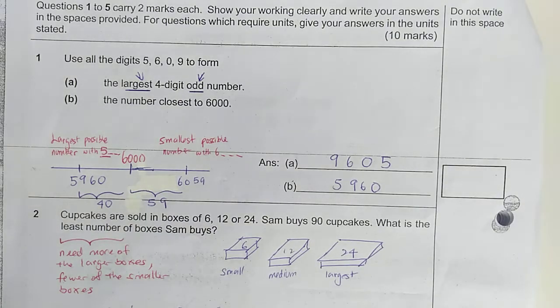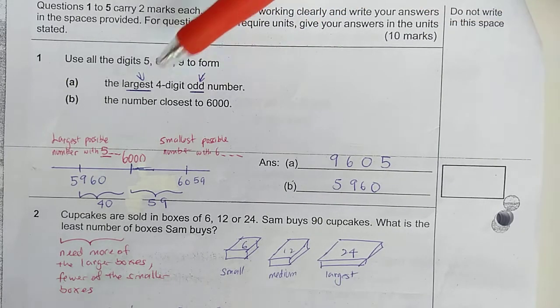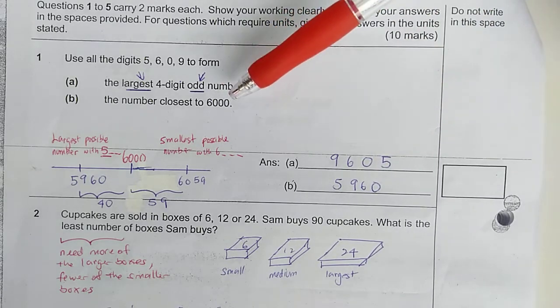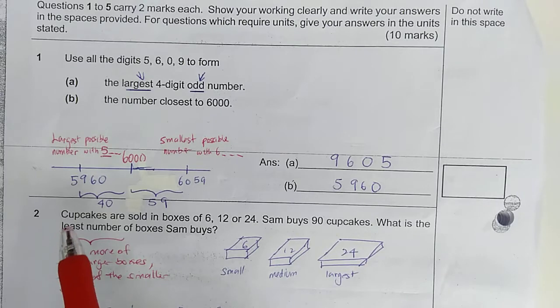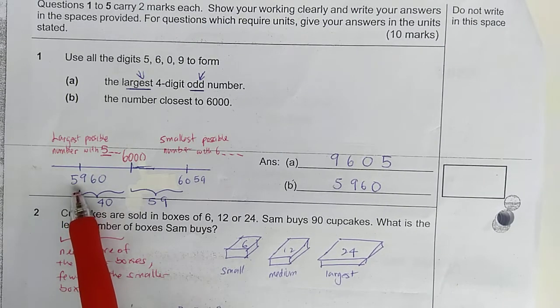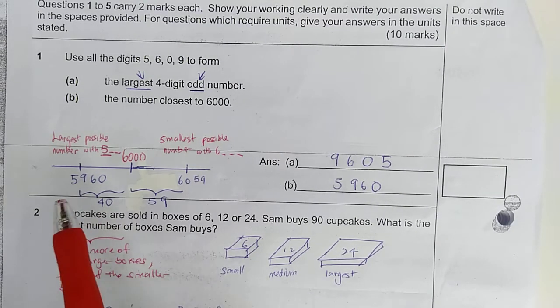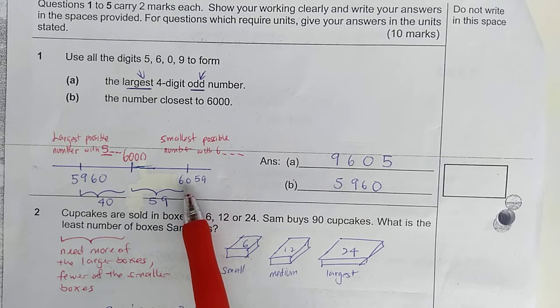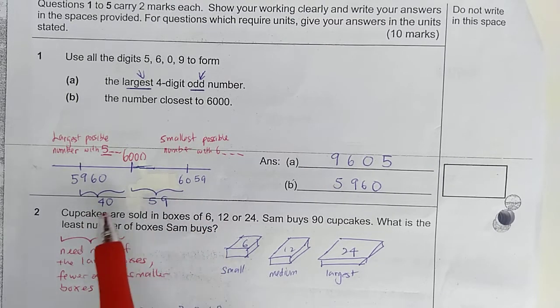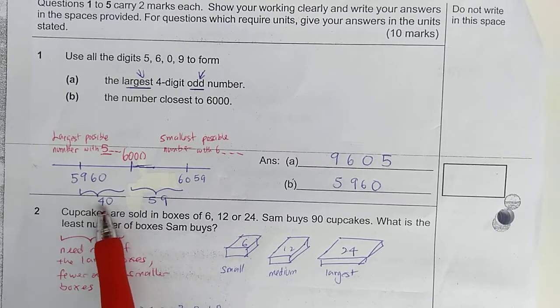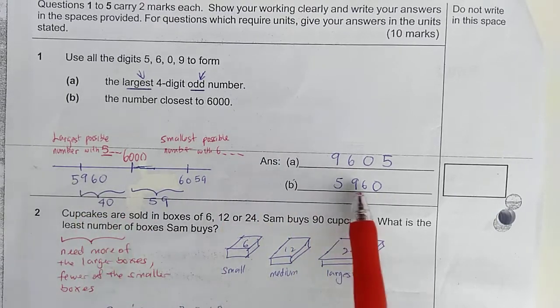Now, in question 1a, these are the conditions. You must have the odd number. It must be the largest number. So, this would be the answer. For the second one, the final number closest to 6,000, the method is you need to think about what's the largest possible 5,000 number and the smallest possible number that starts with 6. And then you find the difference. I can see that this difference is the smaller difference. Therefore, this is the answer for part B.